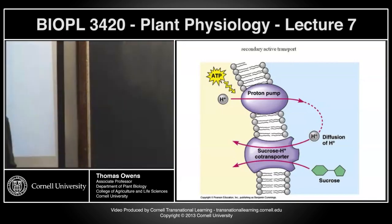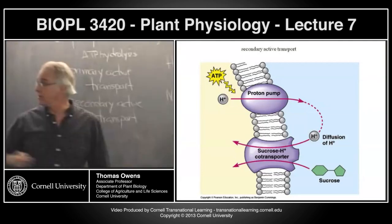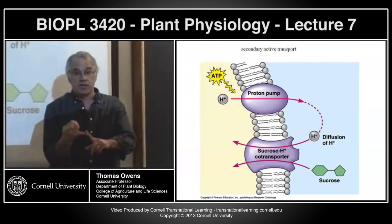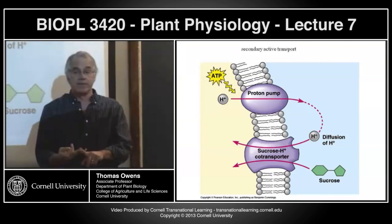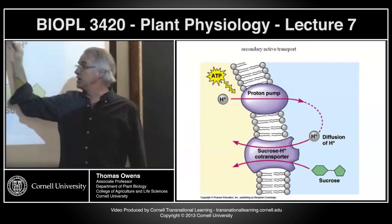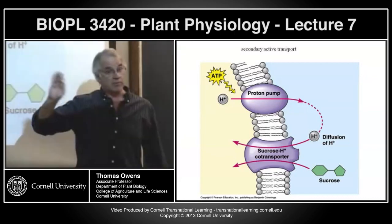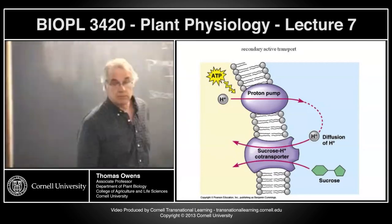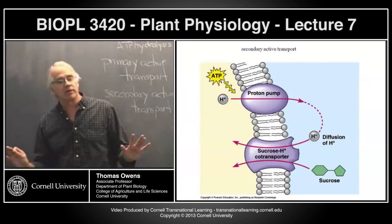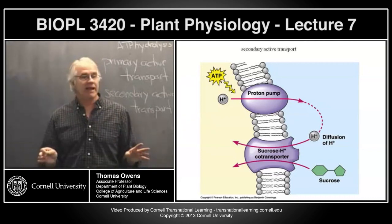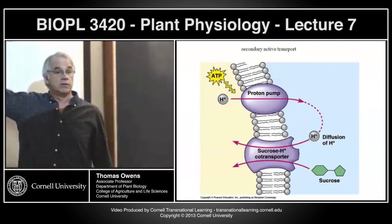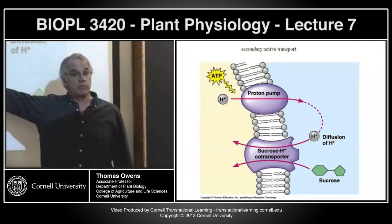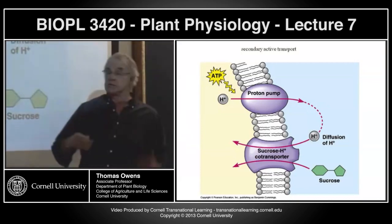Secondary active transport uses the energy of the proton gradient — or in animal cells, the sodium and potassium gradients — to drive all other transport processes at the plasma membrane. The textbook example is a sucrose transporter. Sucrose is pumped into the cell against its chemical gradient — the concentration of sucrose is higher inside than outside — so energy must be put in. That energy comes from the electrochemical gradient of protons created by the primary pump: protons moving in through this co-transport protein. The binding of protons moving through the protein brings about conformational changes that allow sucrose to move in.